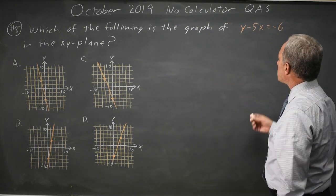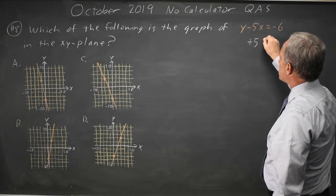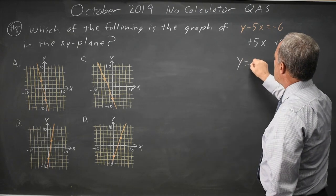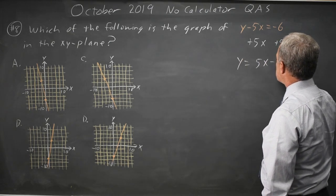Since we're more comfortable with y equals mx plus b, I'm going to put it in slope-intercept form by adding 5x to both sides. y equals 5x minus 6.